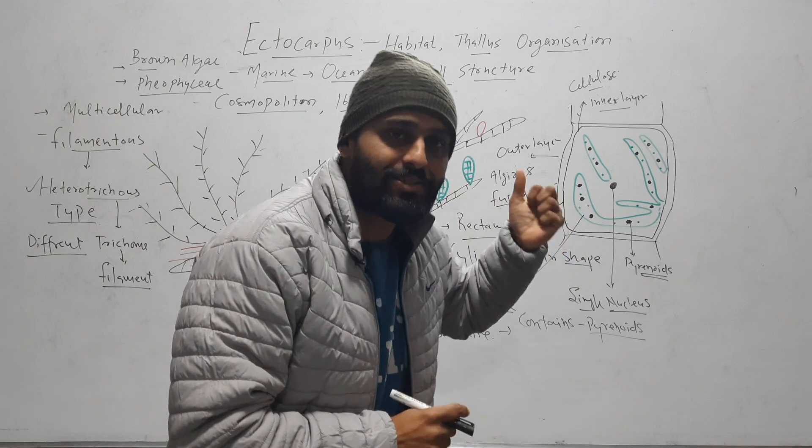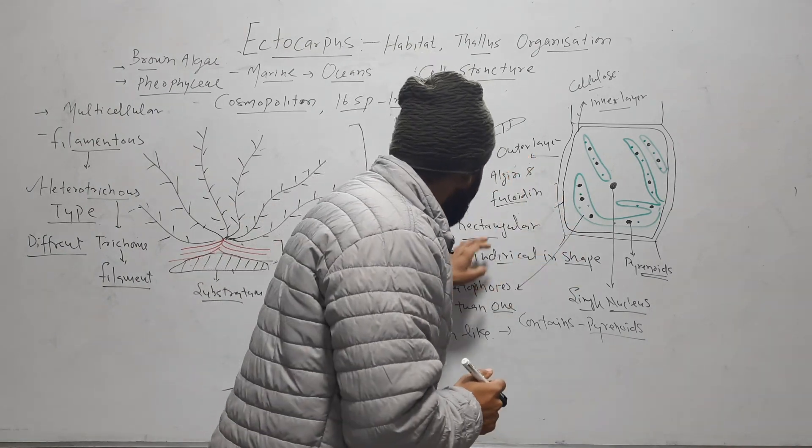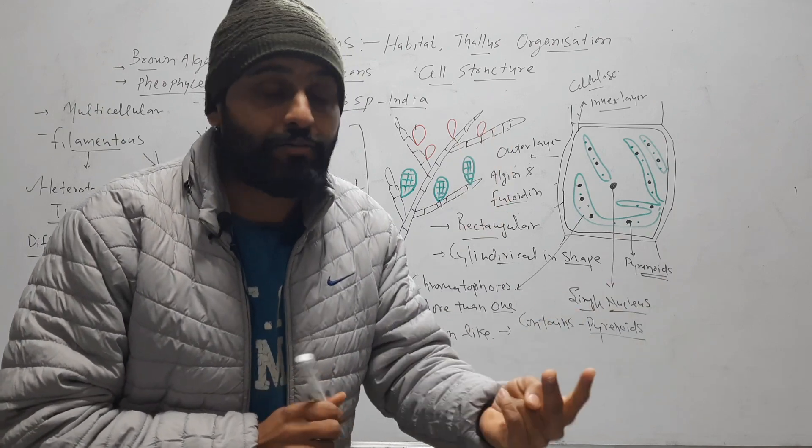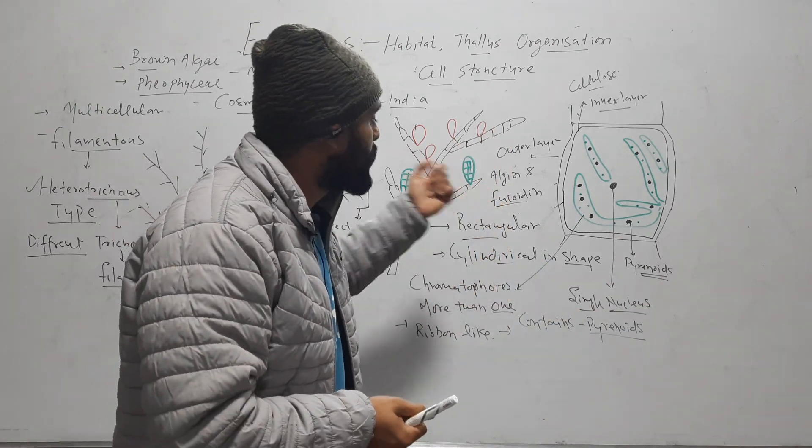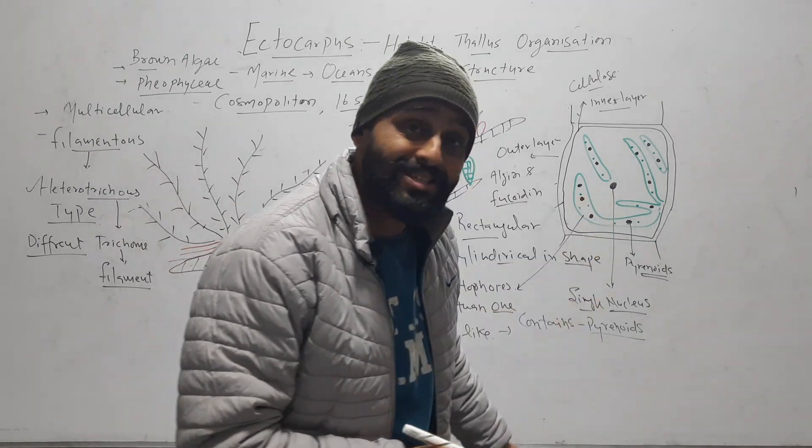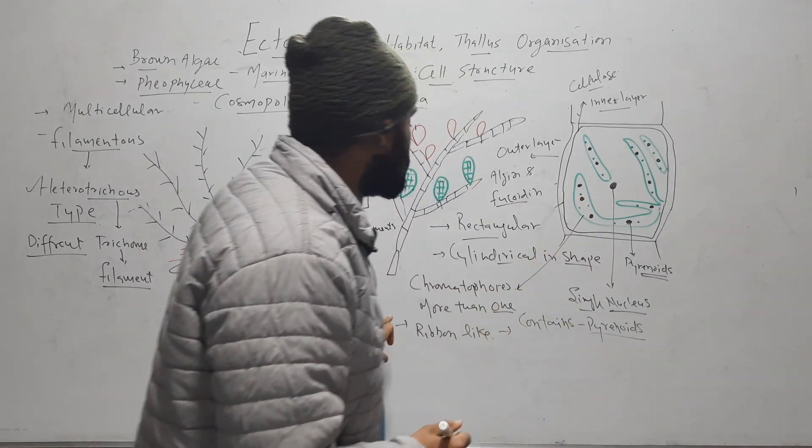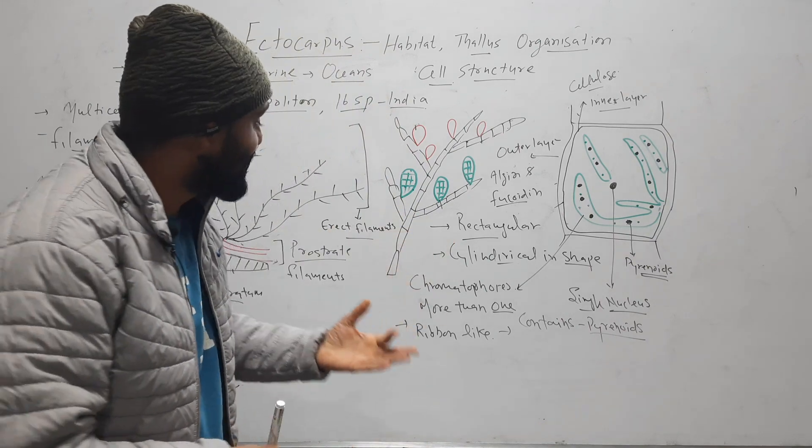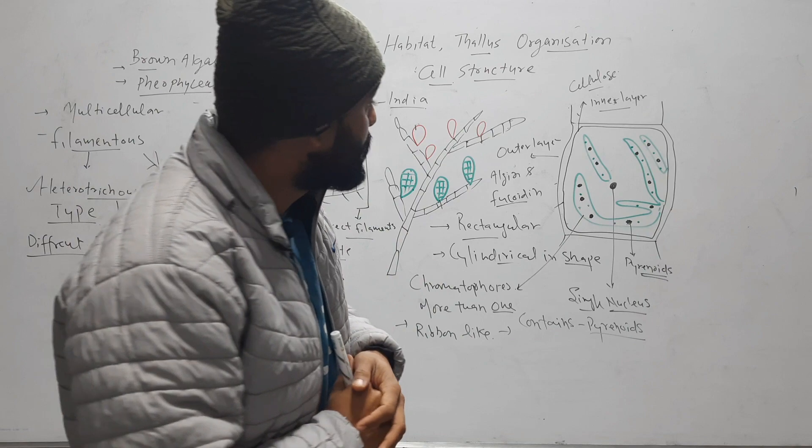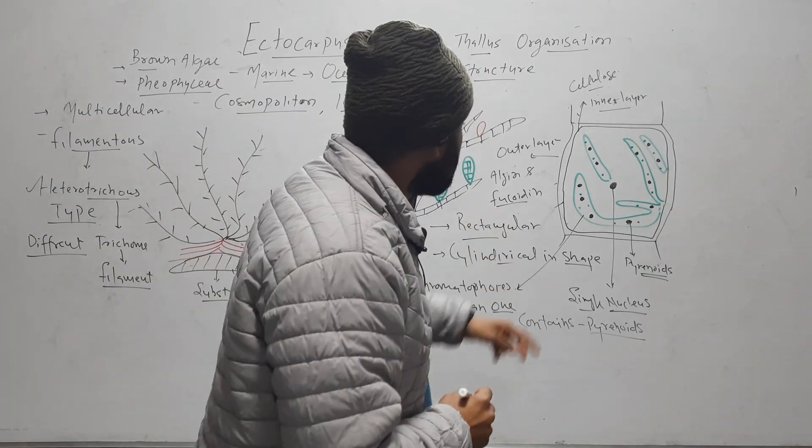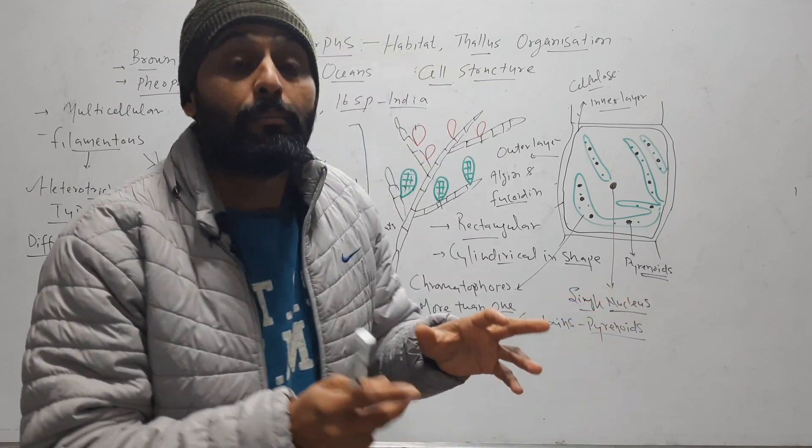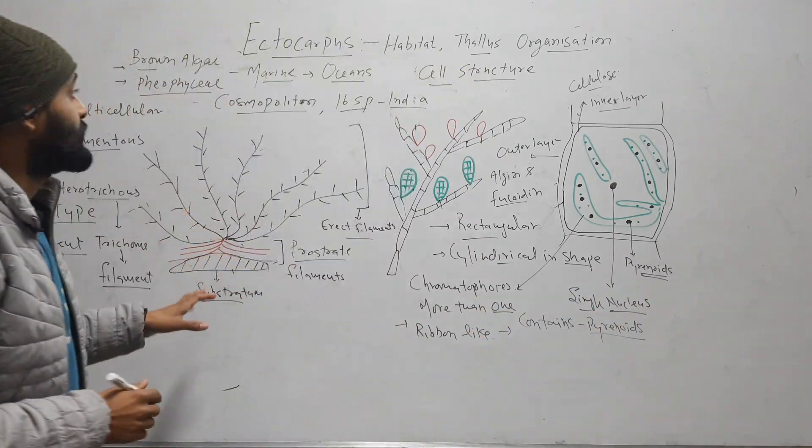Now coming to cell structure. Cell is rectangular or cylindrical in shape. And it has two layered cell wall. Outer is made up of algin and fucoidin. Inner is made up of cellulose. Nucleus is present in the center. And it has chromatophores. The number is more than one. They are ribbon-shaped and they contain pyrenoid. And they have fucoxanthin, which gives characteristic brown color to the thallus.